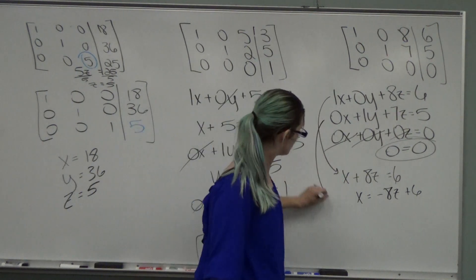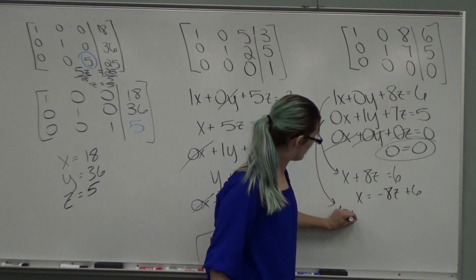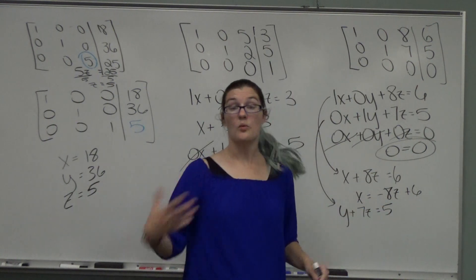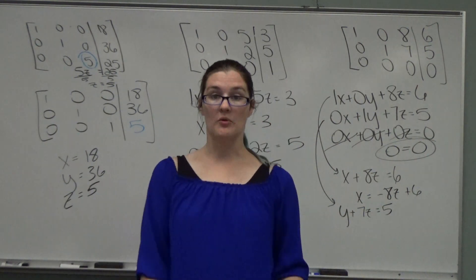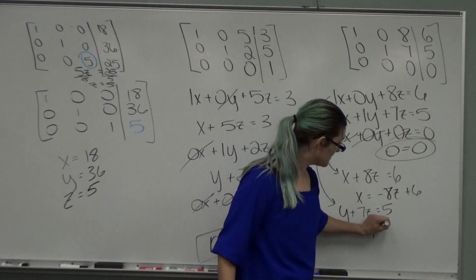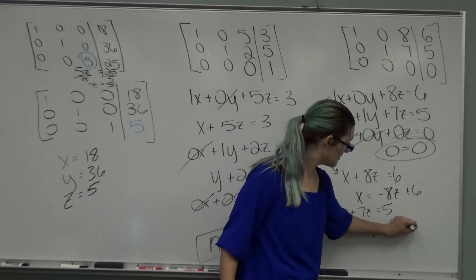Take your next equation. y plus 7z equals 5. y had our leading 1. Solve for y. Subtract 7z. y equals negative 7z plus 5.